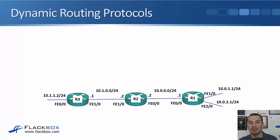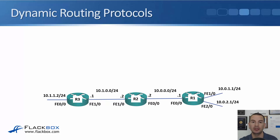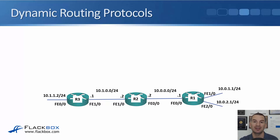So let's look at an example here. I've got three routers: R1, R2, and R3. To the right of R1, I've got the 10.0.1.0/24 and the 10.0.2.0/24 networks. R2 and R3 are not directly connected to those networks, so they're going to need a way to find out about them. I could either use traditional static routing, which would require me as an administrator to configure static routes everywhere, or we can have them learn it automatically through the use of dynamic routing protocols.